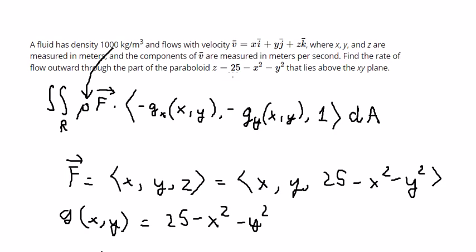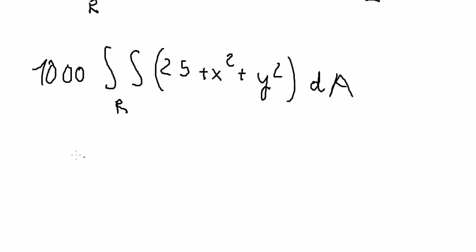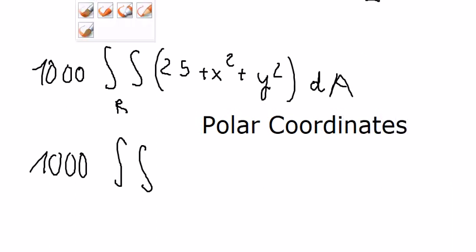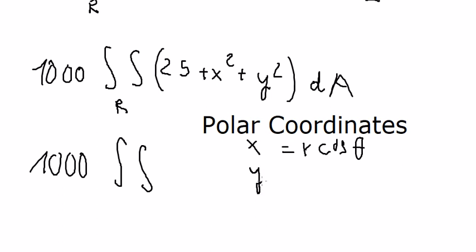The region is the circle 25 minus x squared minus y squared, so we convert to polar coordinates. We substitute x equal to r cosine theta, y equal to r sine theta, and dA becomes r dr d-theta.